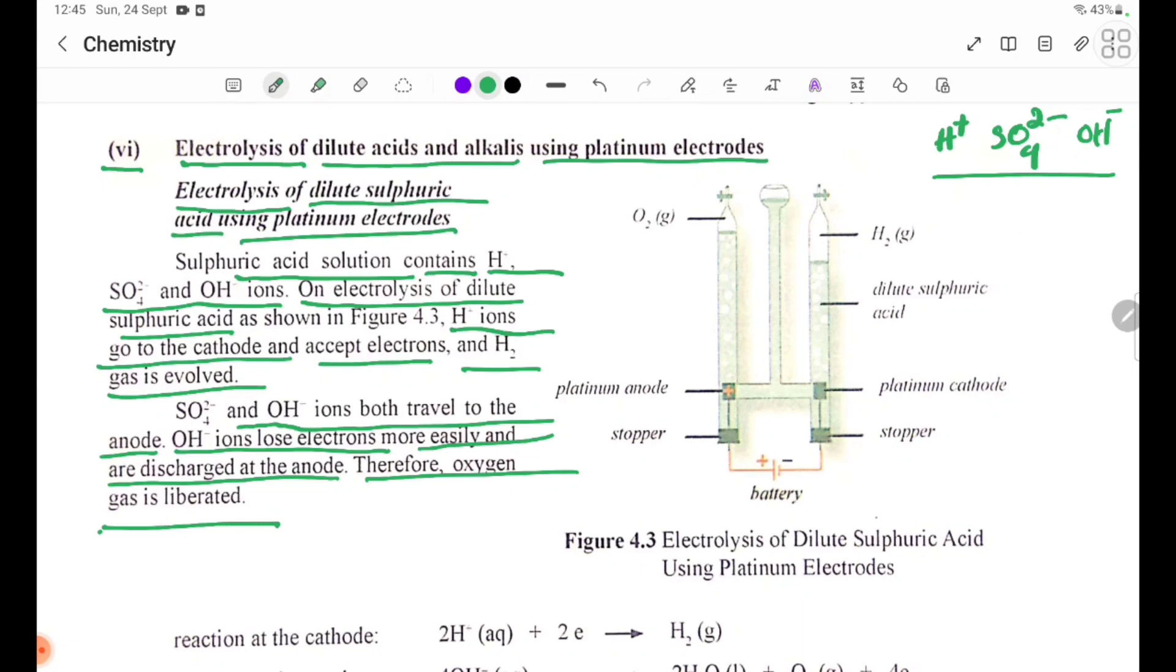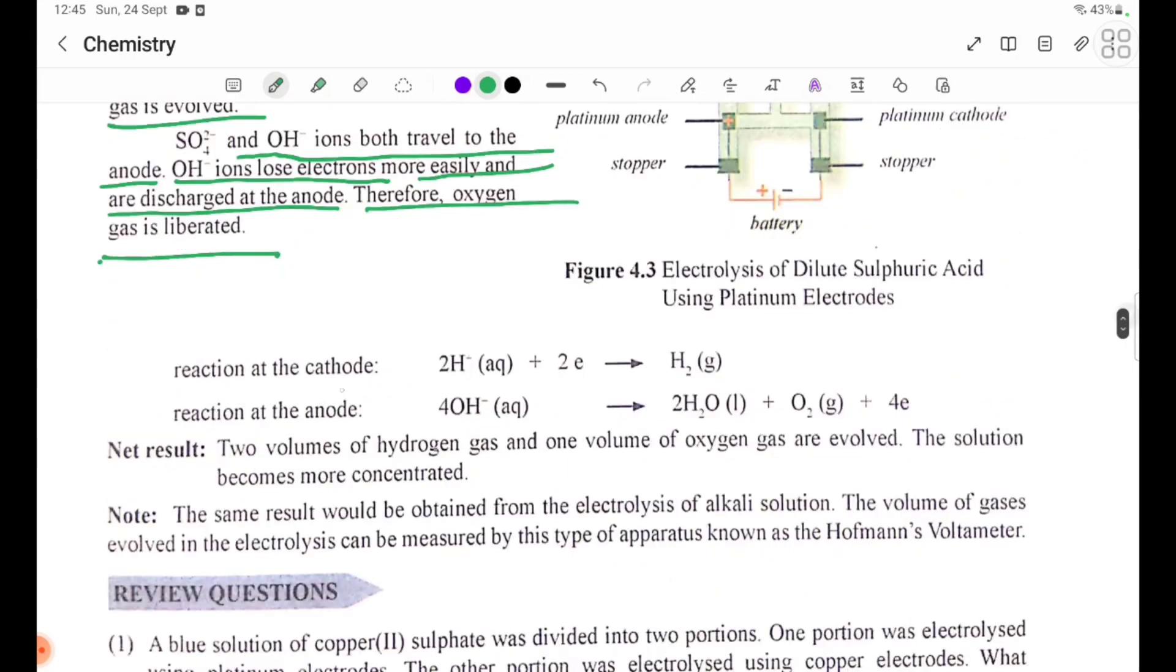Reaction at the cathode: 2H plus aqueous plus 2 electrons forming H2. Reaction at the anode: 4OH minus aqueous forming 2H2O liquid plus O2 gas plus 4 electrons.